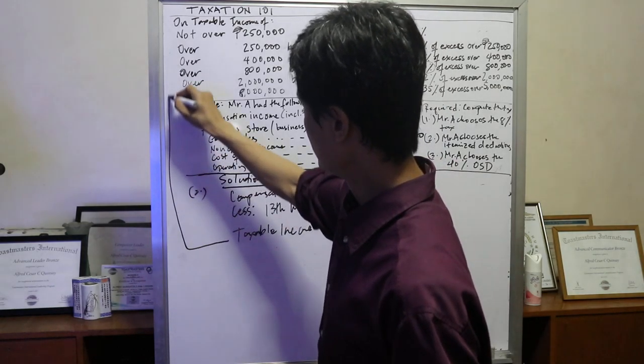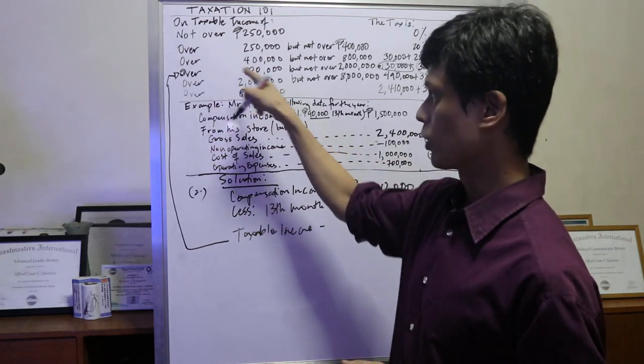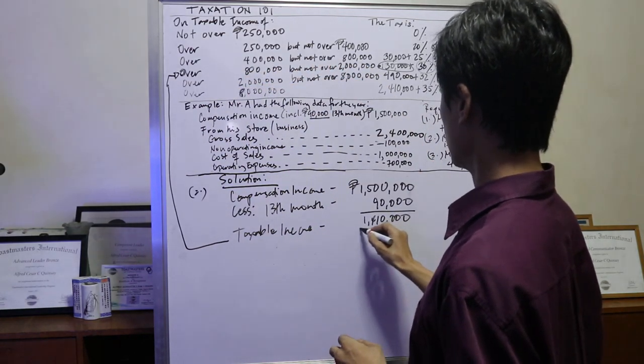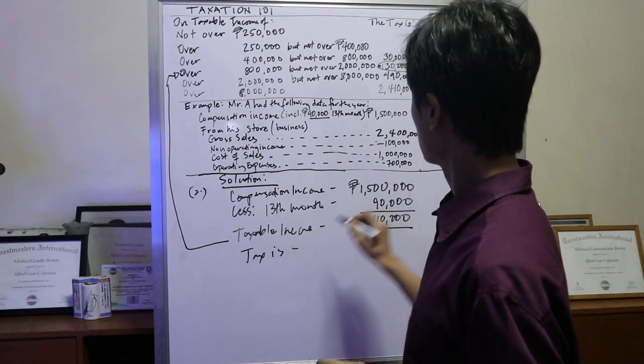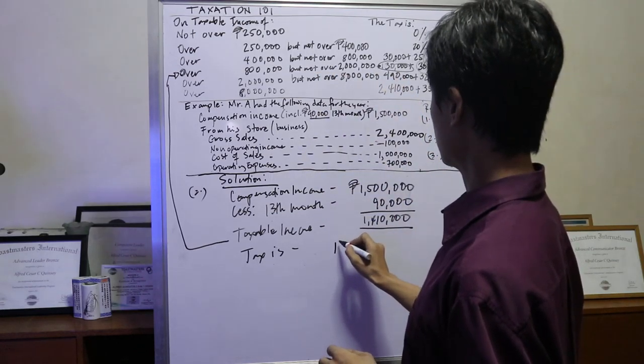So looking at this table, it is in this region or in this range between 800,000 but not over 2 million. So the tax is 130,000.